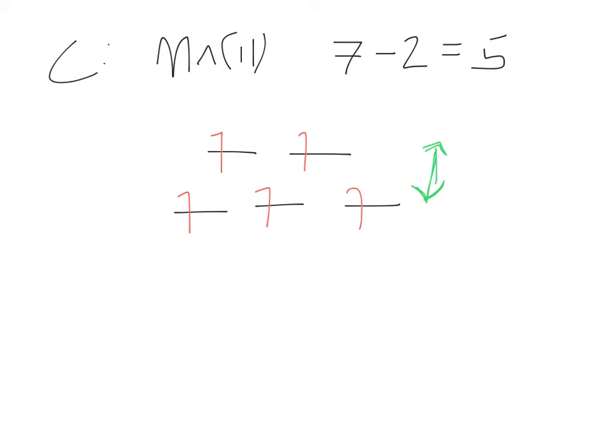This gap is small. These orbitals are very close in energy. And that means you avoid the repulsion of putting two electrons in the same orbital by promoting them up a little bit in energy to these two higher orbitals up here.